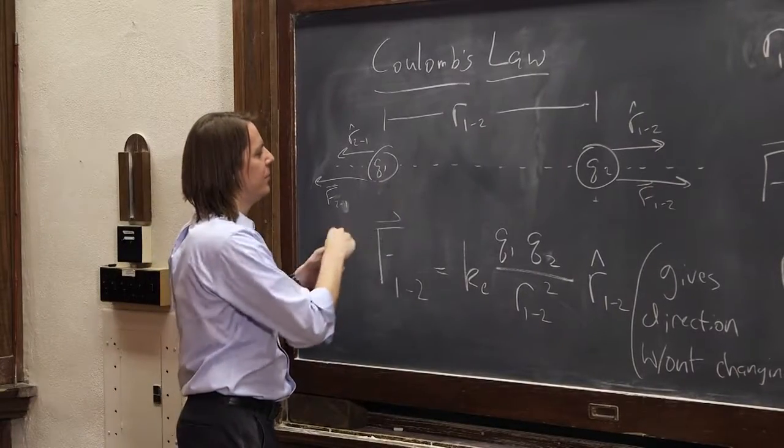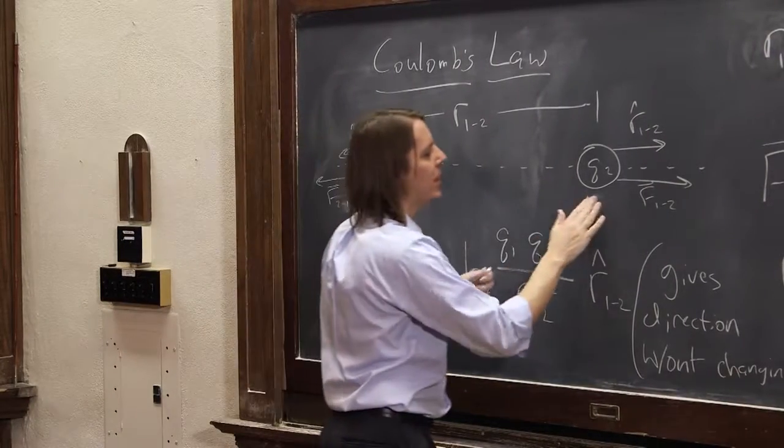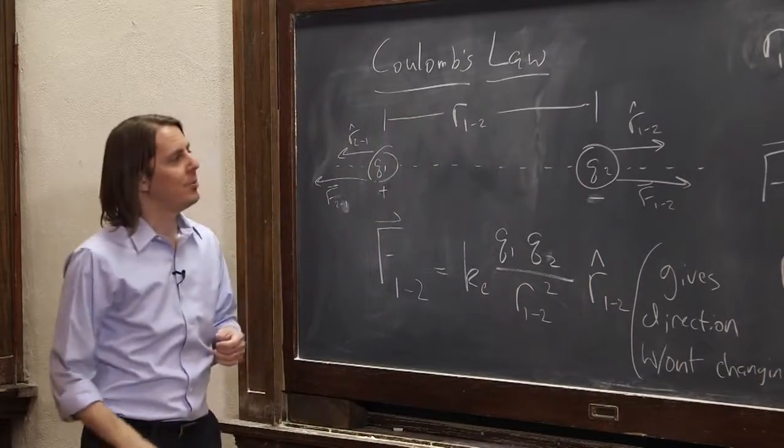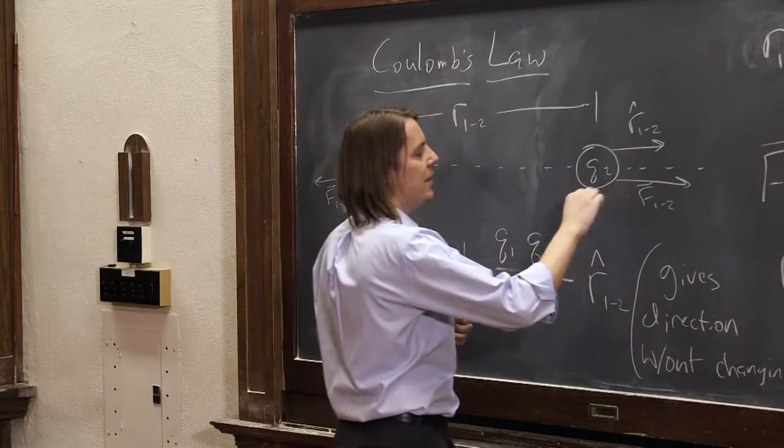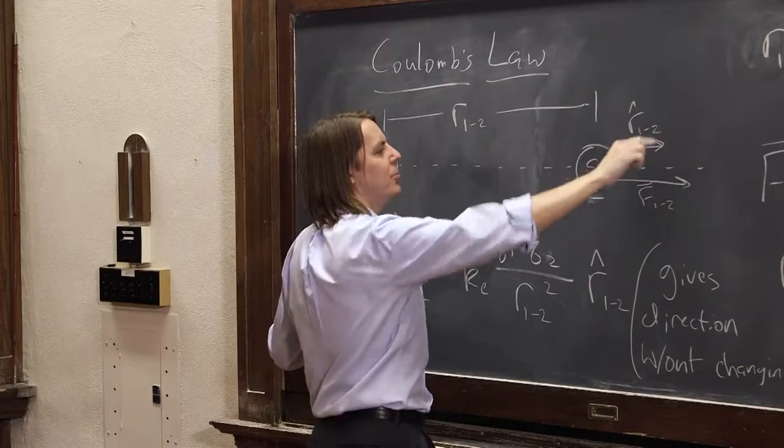If 1 were positive, again, and say 2 were negative, you can see what would happen. The magnitude would be negative, it would point in the opposite direction as the unit vector.